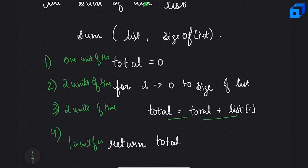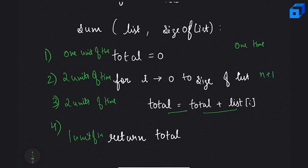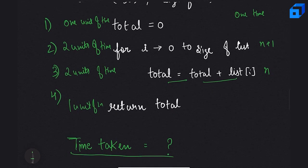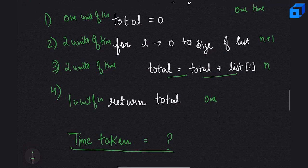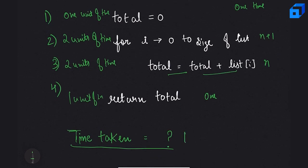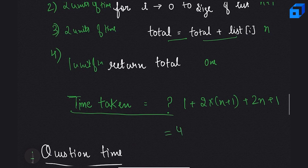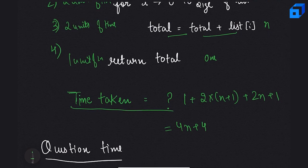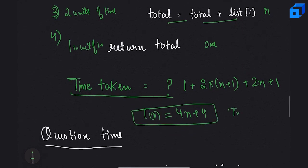Instruction one executes only once. Instruction two executes n+1 times, where n is the size of the list. Instruction three executes n times, and instruction four executes once. The overall execution time is: 1 + 2(n+1) + 2n + 1, which simplifies to 4n + 4. So the running time depends on the input and is a linear function.